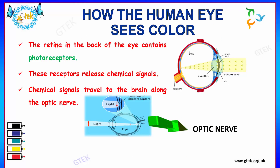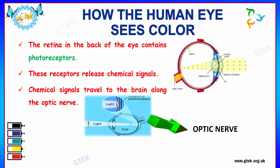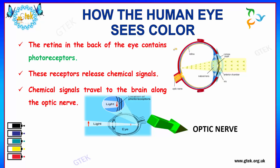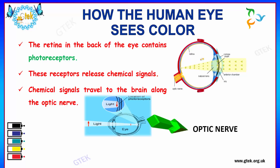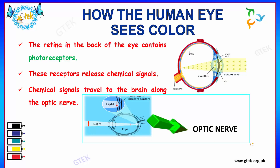There is a question: how does the human eye see color? The answer is because of the retina. The retina in the back of the eye contains photoreceptors. You can see here a typical representation of the eyeball and the layer of the retina. These receptors release chemical signals which travel to the brain along the optic nerve.